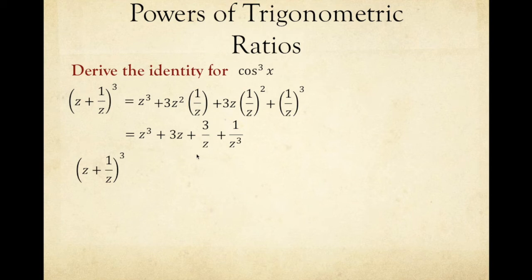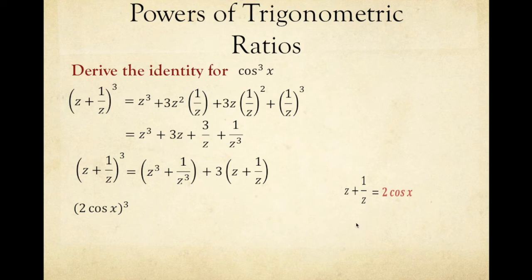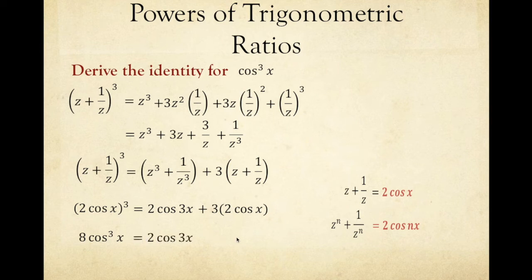We group the first and last terms as z cubed plus 1 over z cubed, and factor out 3 from the middle two terms to get 3 times z plus 1 over z. The left side, z plus 1 over z cubed, equals 2 cosine x to the power of 3. For z cubed plus 1 over z cubed, our n equals 3, so it equals 2 cosine 3x. Therefore, 8 cosine cubed x equals 2 cosine 3x plus 6 cosine x.